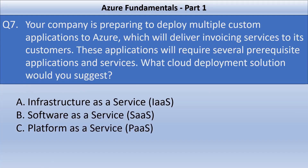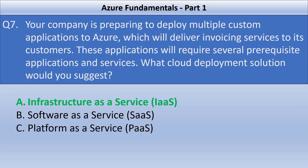Seventh question: your company is preparing to deploy multiple custom applications to Azure that will deliver invoicing services and require several prerequisite applications and services. What cloud deployment solution would you suggest? When a question involves lots of customization needs, you go with infrastructure as a service, as it offers the necessary flexibility, control, and scalability to meet custom requirements.